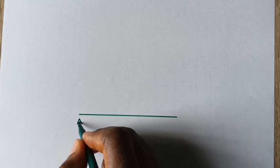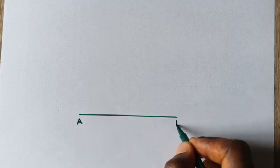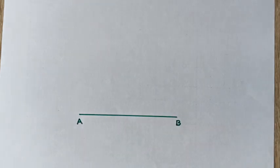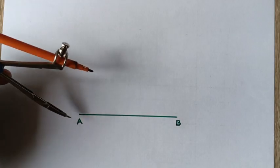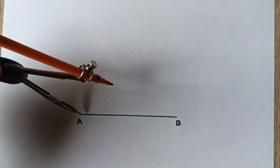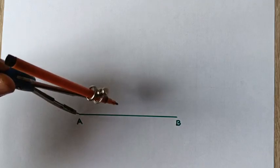Once you're done with the labeling, open your pair of compasses to a convenient radius. Stand at point A, which is your reference point, and cut an arc.